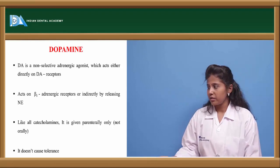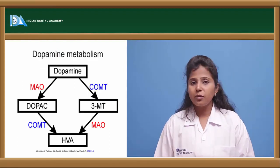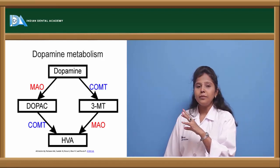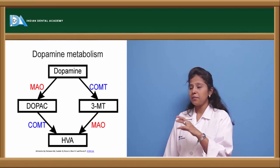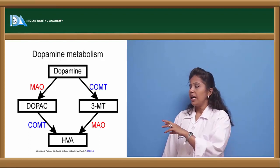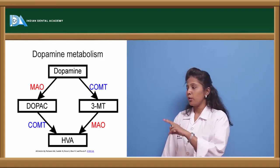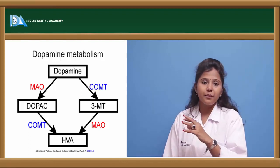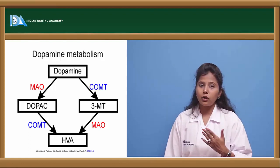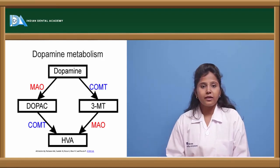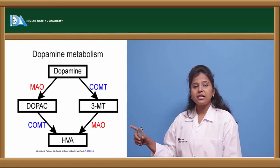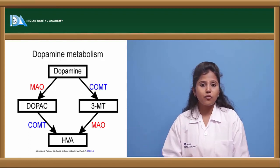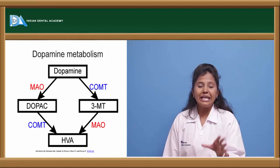Dopamine is metabolized by two enzymes: MAO and COMT. MAO converts dopamine to DOPAC, and COMT converts it to 3-methoxytyramine (3-MT). When COMT acts on DOPAC, it forms HVA (homovanillic acid). When MAO acts on 3-MT, it also forms the common compound HVA, the metabolic end product of dopamine.